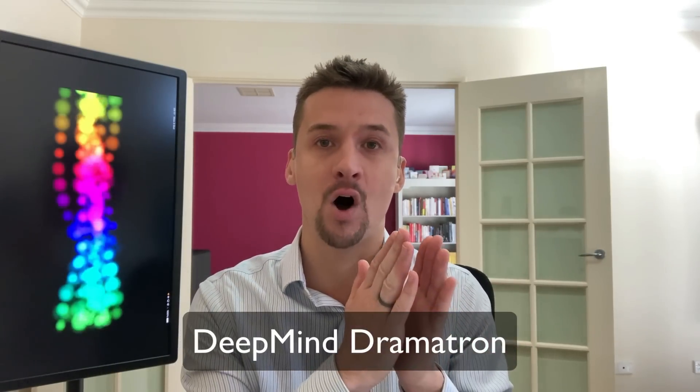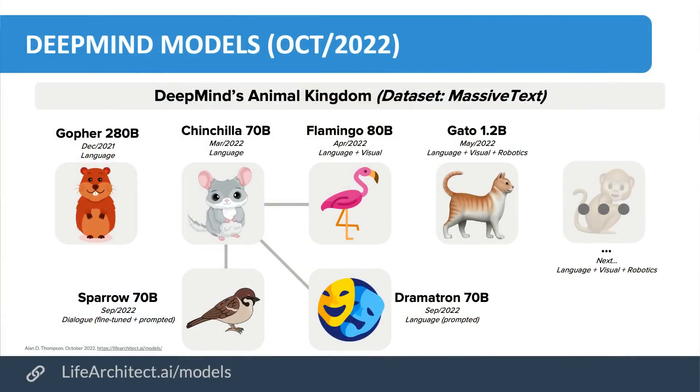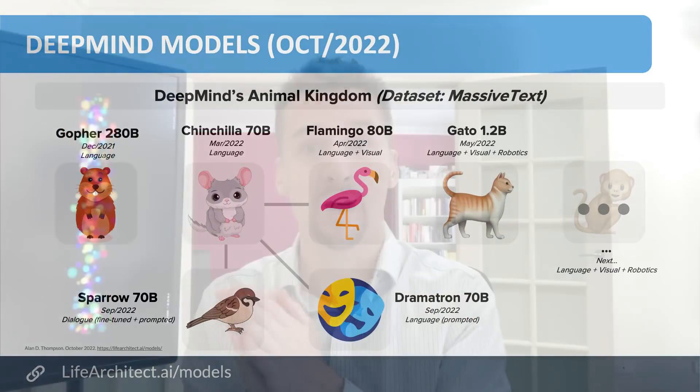That's DeepMind Sparrow: based on DeepMind Chinchilla's 70 billion parameters, fine-tuned, prompted, and given access to Google Search to make it the latest and greatest dialogue model. It's currently closed, but DeepMind is very open about these announcements. I'll be covering DeepMind Dramatron later — the turnaround time from researching Dramatron (a model based on Chinchilla 70B) to releasing the paper was about seven business days, versus the 12-to-24-month academic review process.